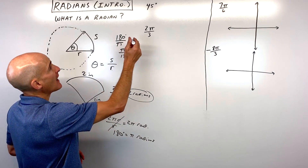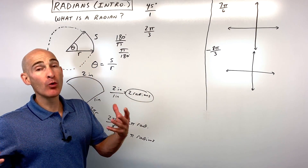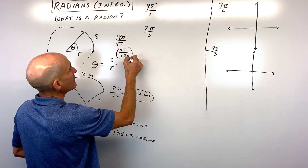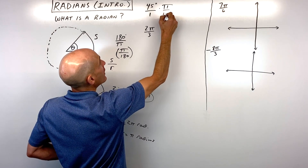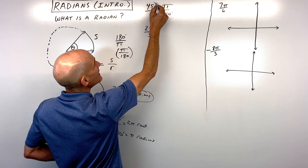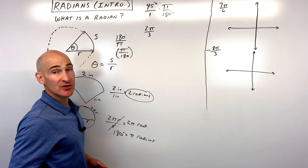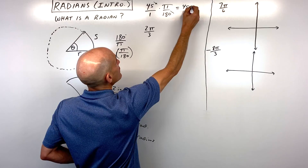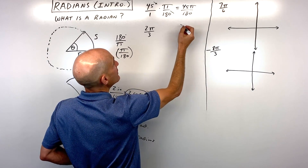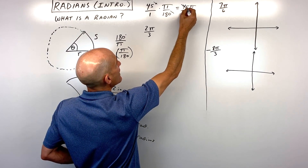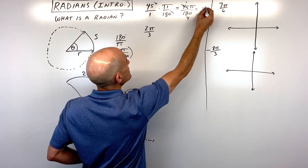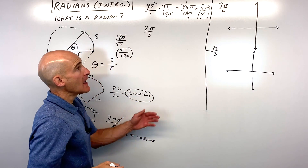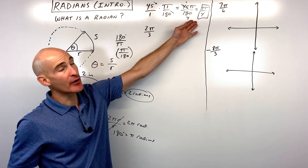By multiplying — for example, if we had 45 degrees and want to know what that is in radians — we multiply by the conversion factor pi over 180 degrees. Notice how the degree symbol in the numerator cancels with the degree symbol in the denominator. When we multiply horizontally across, we get 45 pi over 180. Since 45 goes into 180 four times, we're left with pi over four. This is now in radians — notice there's no degree symbol anymore.